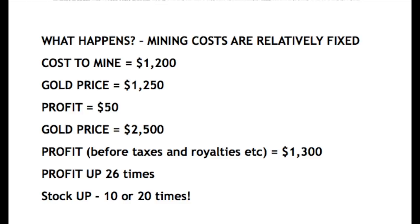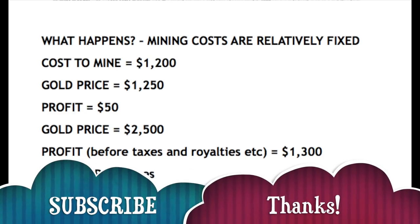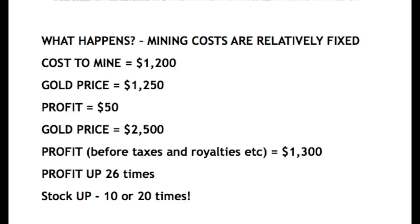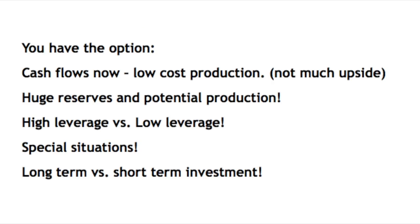Why are miners more leveraged to gold? The cost to mine is, let's say, $1,200 per ounce. The gold price is $1,250 per ounce. The profit is then $50. If gold prices jump to $2,500, the profit — after taxes, royalties, increased costs — is roughly $1,300. So the profit is up 25 times, and the stock consequently will also be up 10 to 20 times. If you want to own gold miners, deep research is required. The keys are: cash flow now with low-cost production (not so much upside), versus huge reserves with higher future production costs (huge future potential — mines like Novagold). High leverage versus low leverage: higher costs mean much more elasticity to the gold price. You also have special situations, takeovers, long-term vs. short-term investment. Every miner is different, so if you want to dig deep into miners, there is a lot of work.